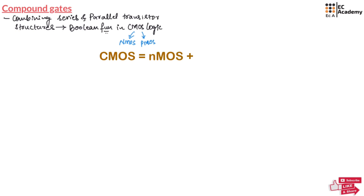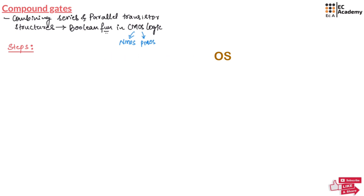Here we need to follow some steps to implement the Boolean function in CMOS logic. When implementing using NMOS, if there is an AND operation in the Boolean function we need to connect NMOS in series, and if we are having an OR operation in the Boolean function we need to connect NMOS in parallel.